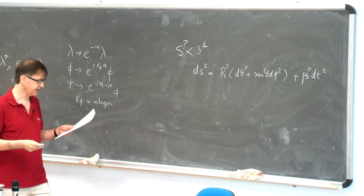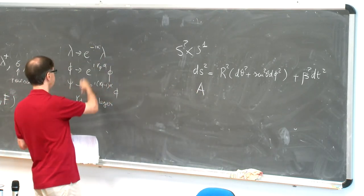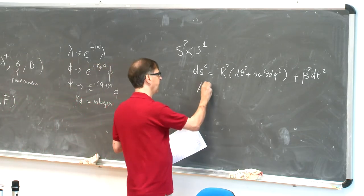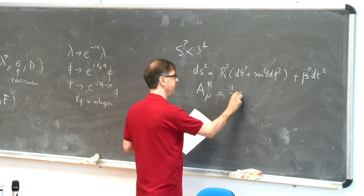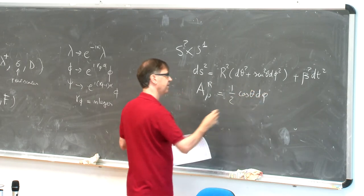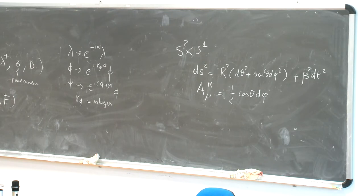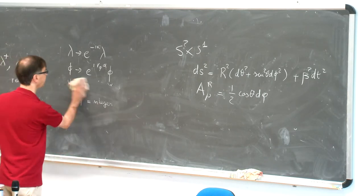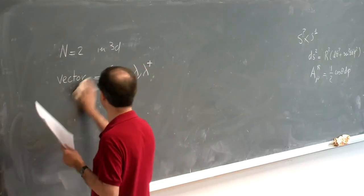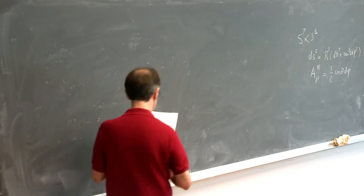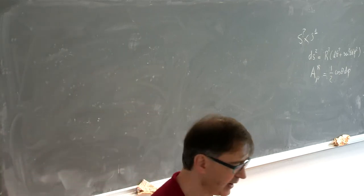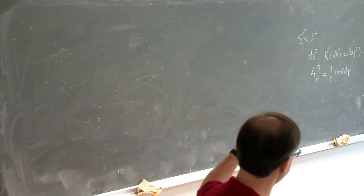The background: the metric is the metric on S^2 × S^1 — a flat metric on S^2 and a circle of radius β. This is a topological twist: theories independent of the metric you put on the manifold, so if you start with something different you will get precisely the same formula. Once I choose the R-symmetry, I turn on a background field for the R-symmetry, which is essentially a unit monopole. This is needed to solve the supersymmetry equations — the picture on the boundary is precisely the same as in the bulk.